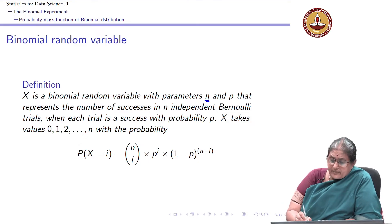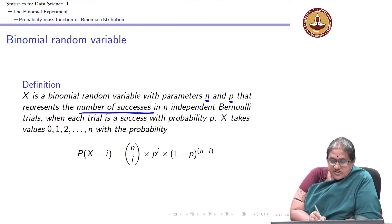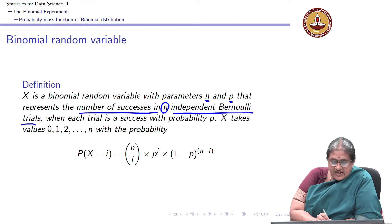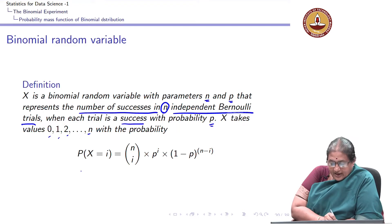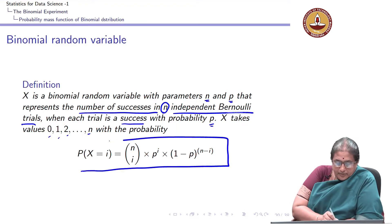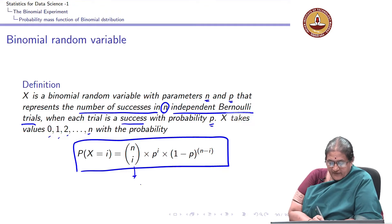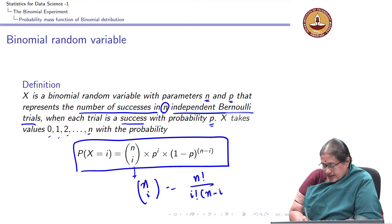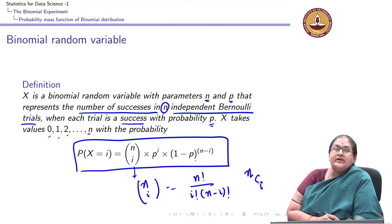The parameters of the binomial random variable are n and p. It represents the number of successes in n independent Bernoulli trials, where each trial is a success with probability p. x takes the value 0, 1, 2 up to n with probability: P(x = i) = n choose i, the binomial coefficient, where n choose i equals n factorial divided by i factorial times (n minus i) factorial. Some books refer to it as nCi times p to the power of i times (1 minus p) to the power of (n minus i).